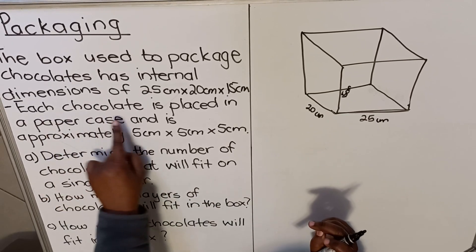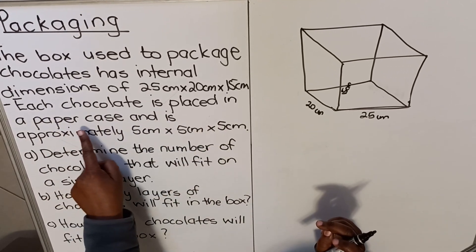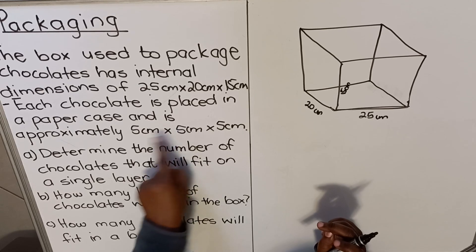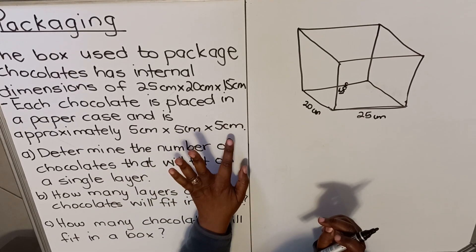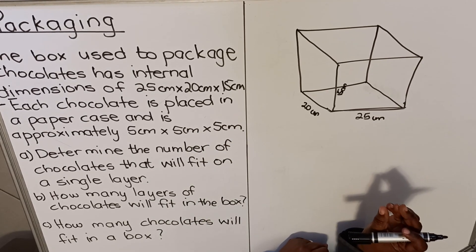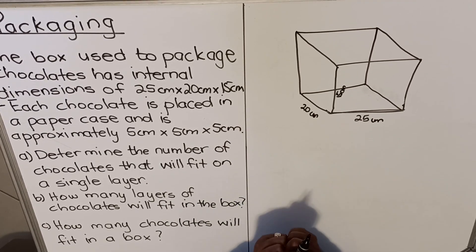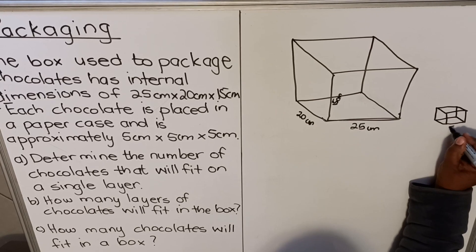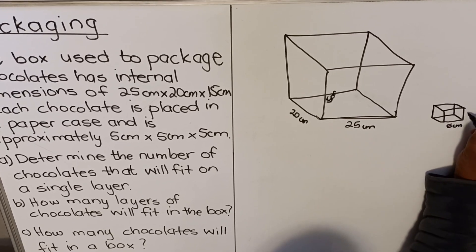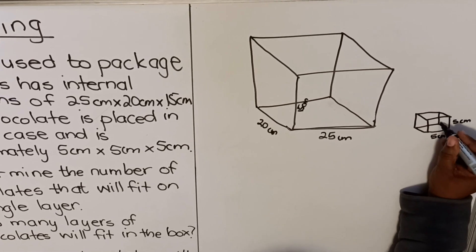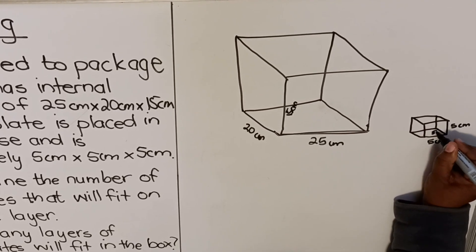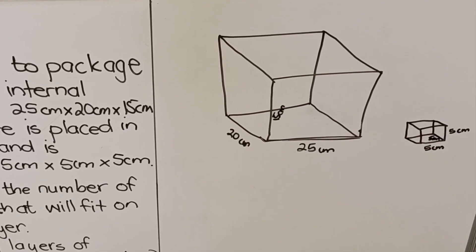Then you have another small box. Each chocolate is placed in a paper case and is approximately 5 centimeter times 5 centimeter times 5 centimeter. So let's draw the small case that they put to pack the chocolate. The case is 5 centimeter by 5 centimeter, your height is 5 centimeter and your breadth is 5 centimeter. This is a cube, 5 centimeter as well.